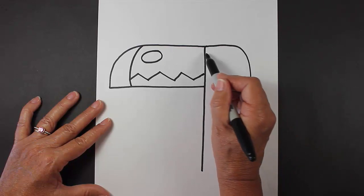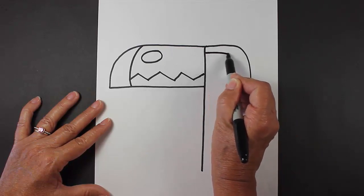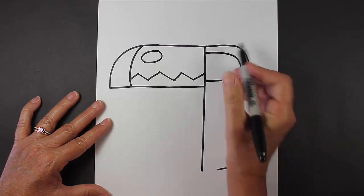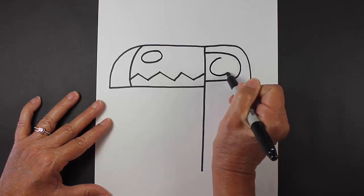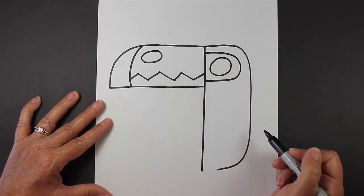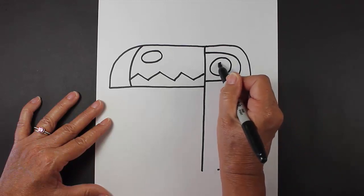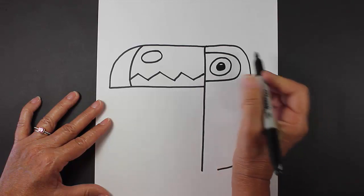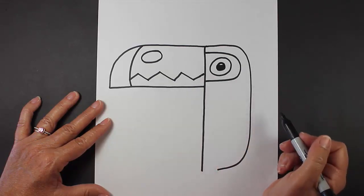For a toucan's eye, I'm just going to make a sideways letter U, and inside that letter U, I'm going to make a very large circle. Inside that circle, I'm going to make a smaller circle, and I'm going to fill that in with black, and I left a little bit of a shine mark there.